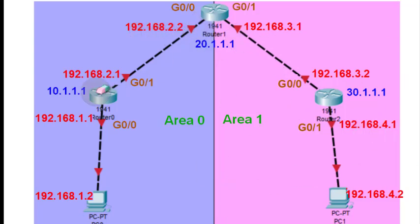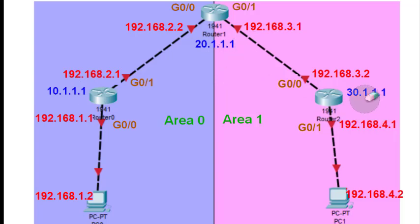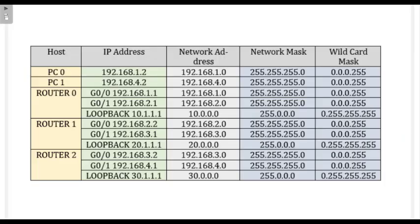For router 0, the loopback address is 10.1.1.1; for router 1 it is 20.1.1.1; and for router 2 it is 30.1.1.1. These are the addresses of the various hosts we are using.